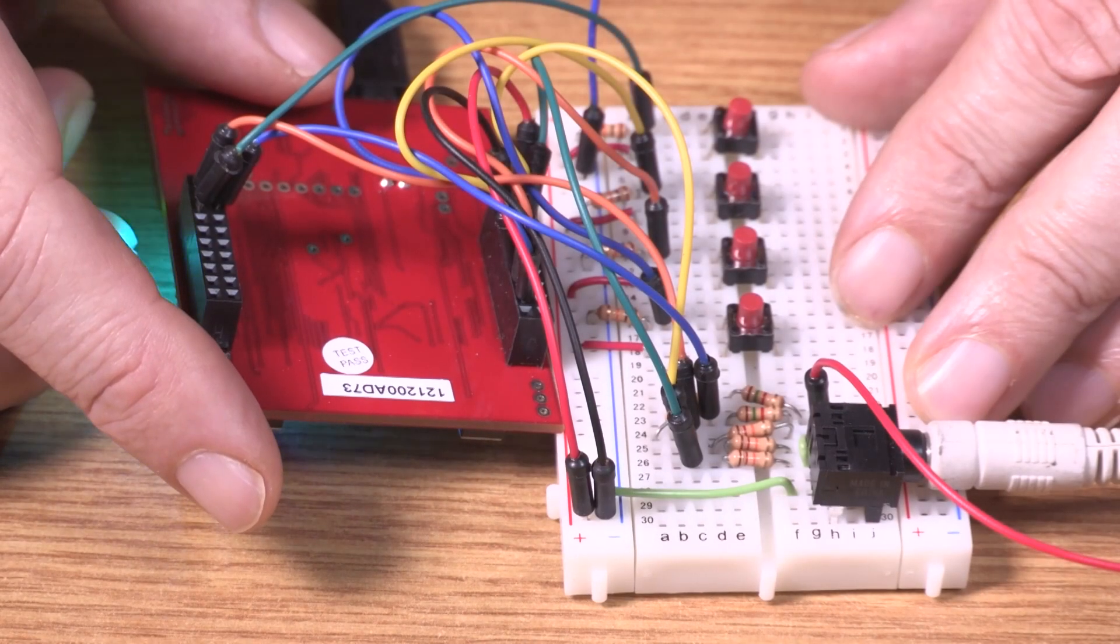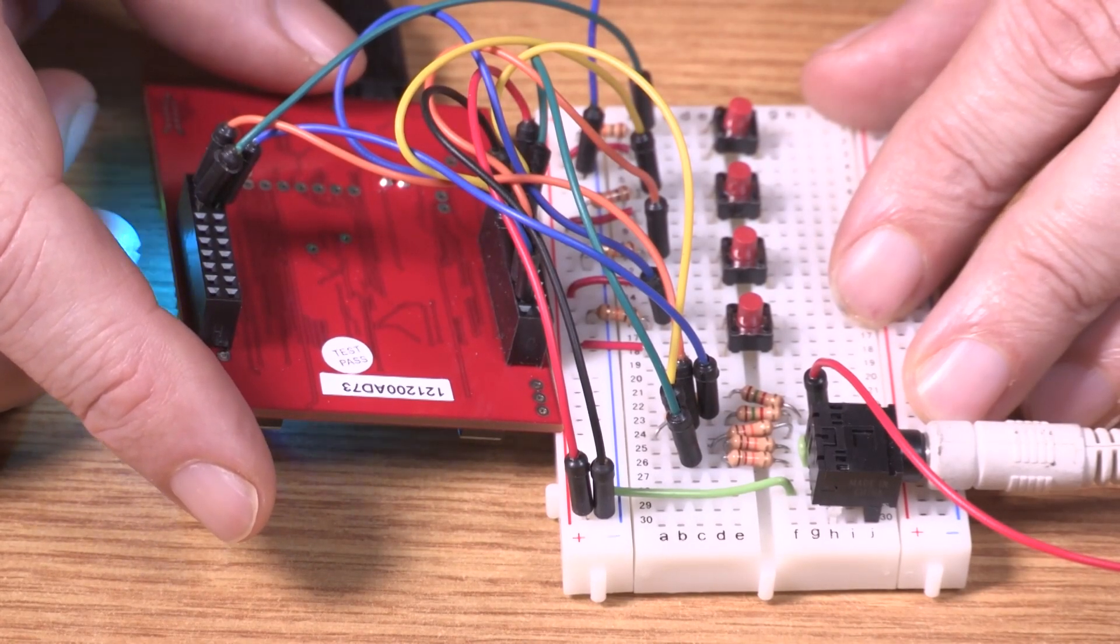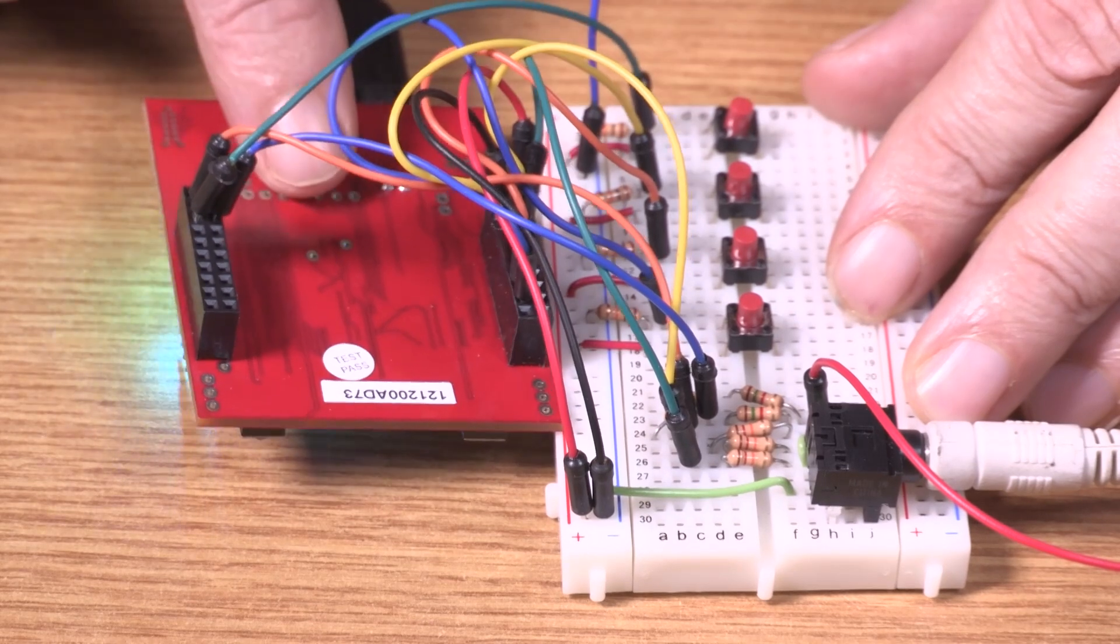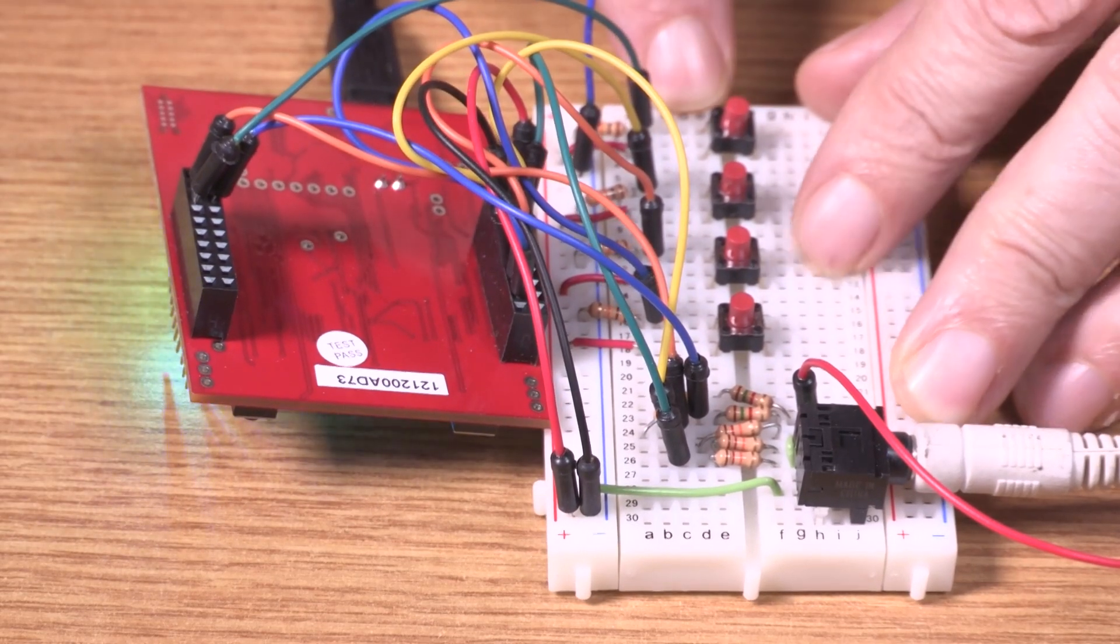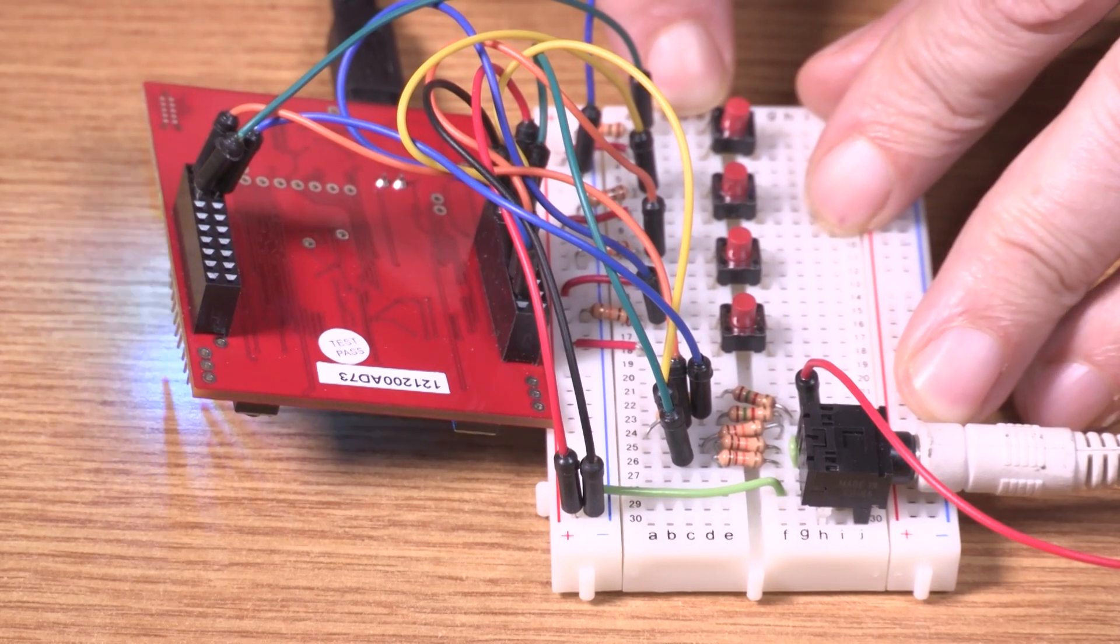Let's begin lab 13 by showing you what the final product will be like. We have the LaunchPad here, flipped upside down, and on this part of the protoboard I've interfaced four buttons. Those are going to be our piano keys.